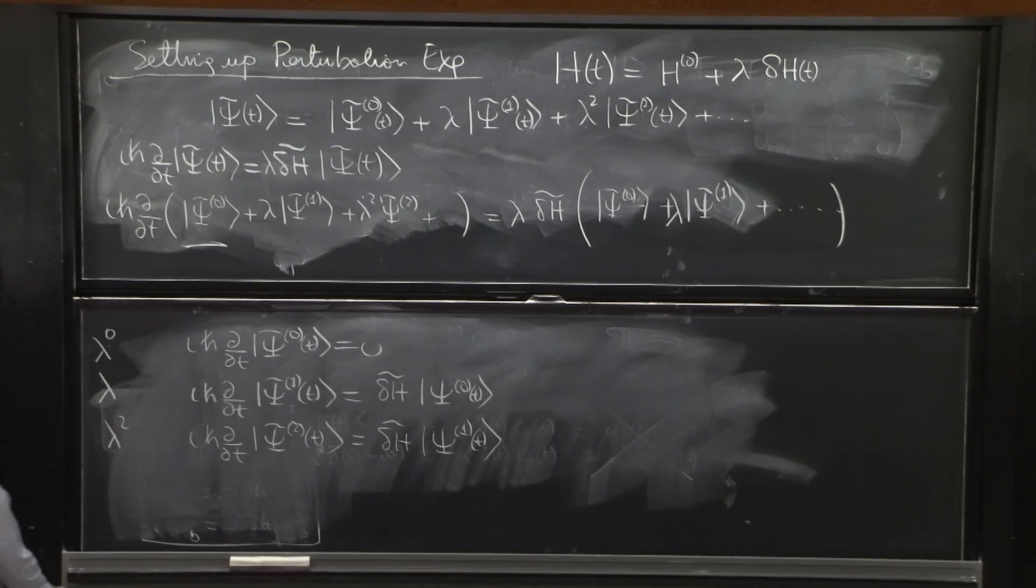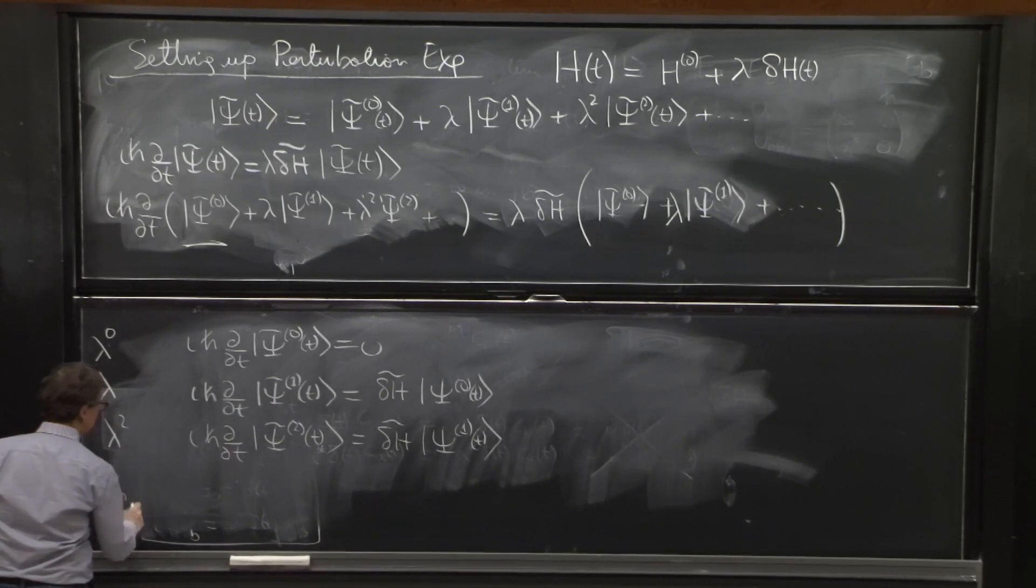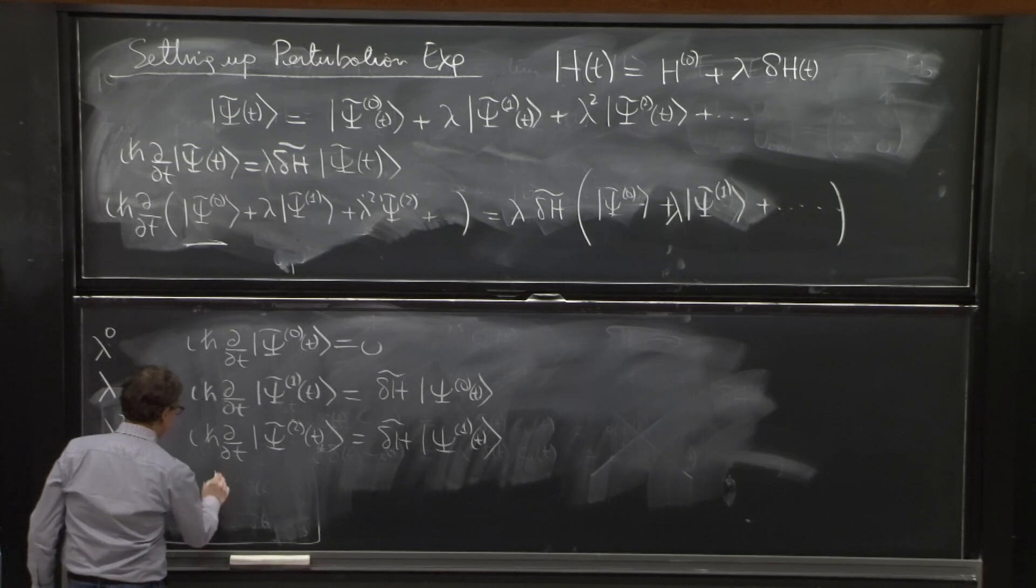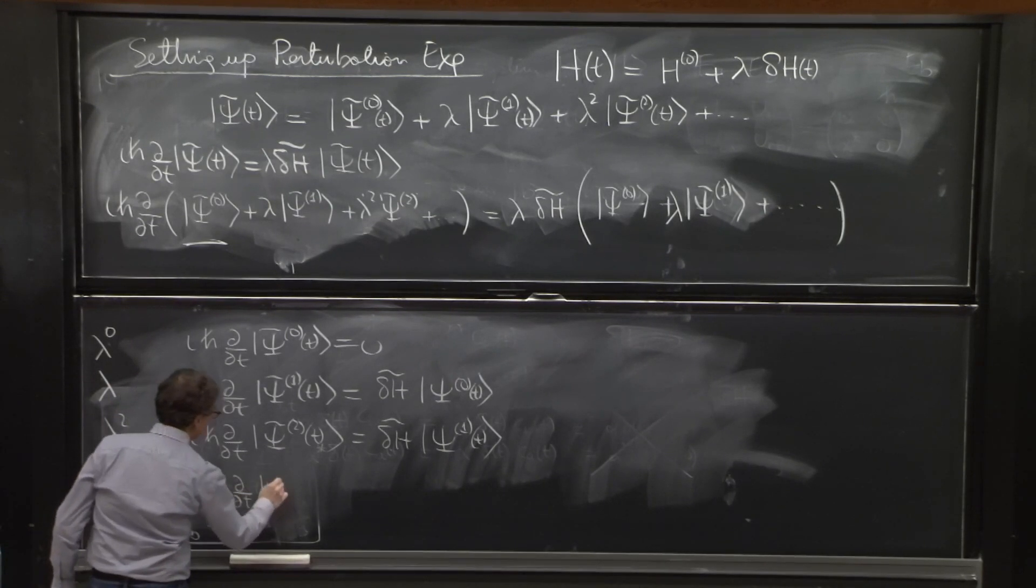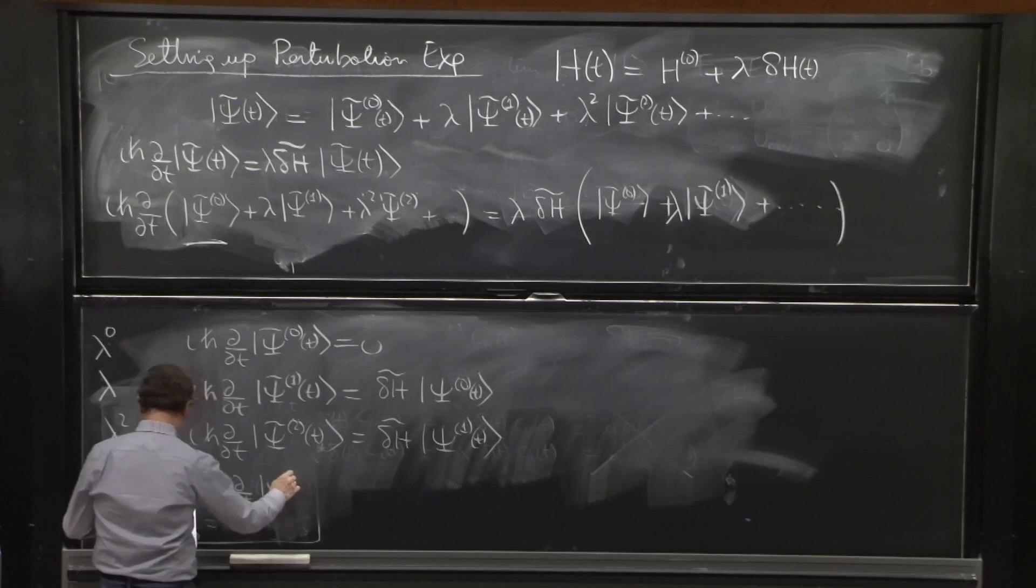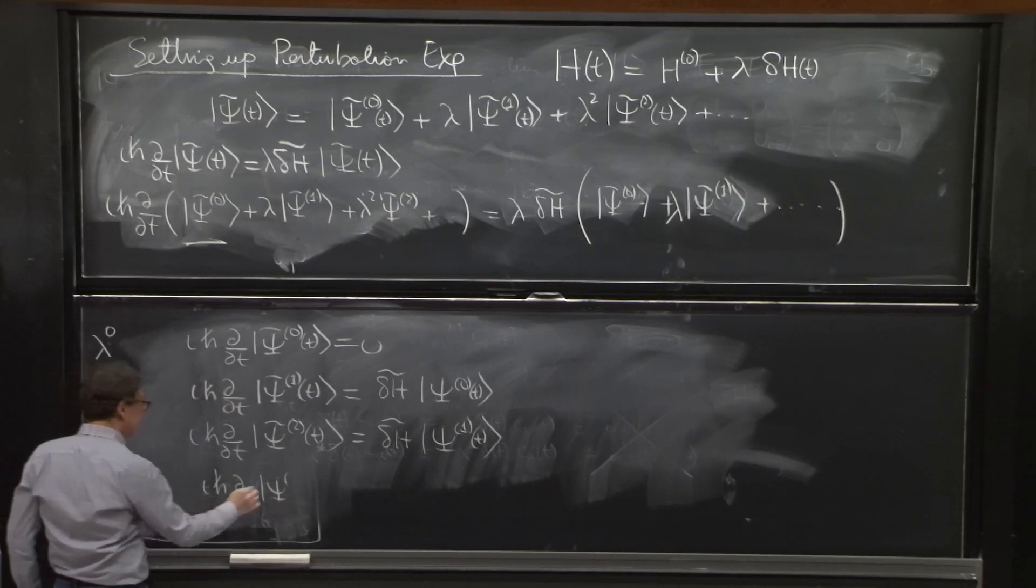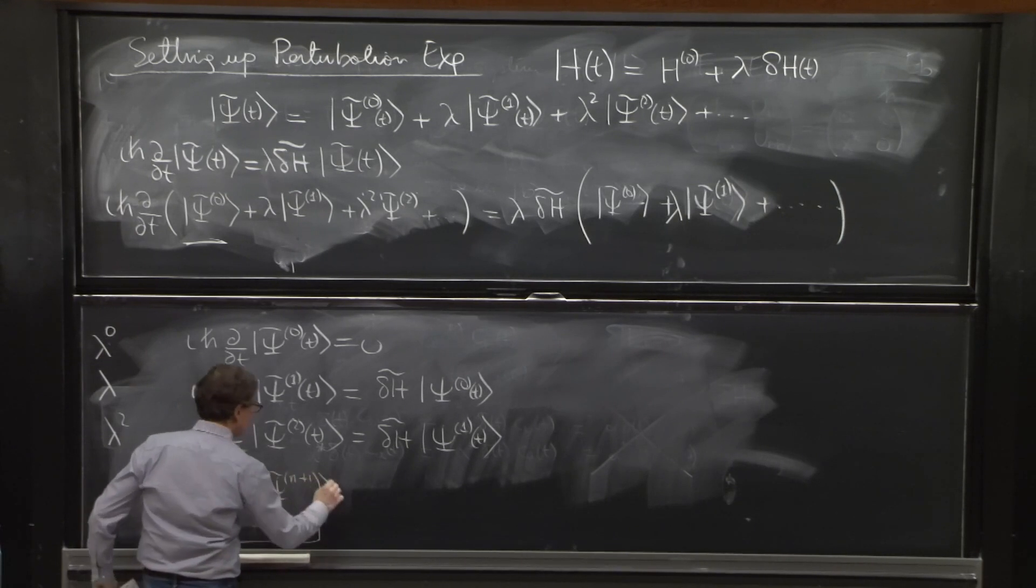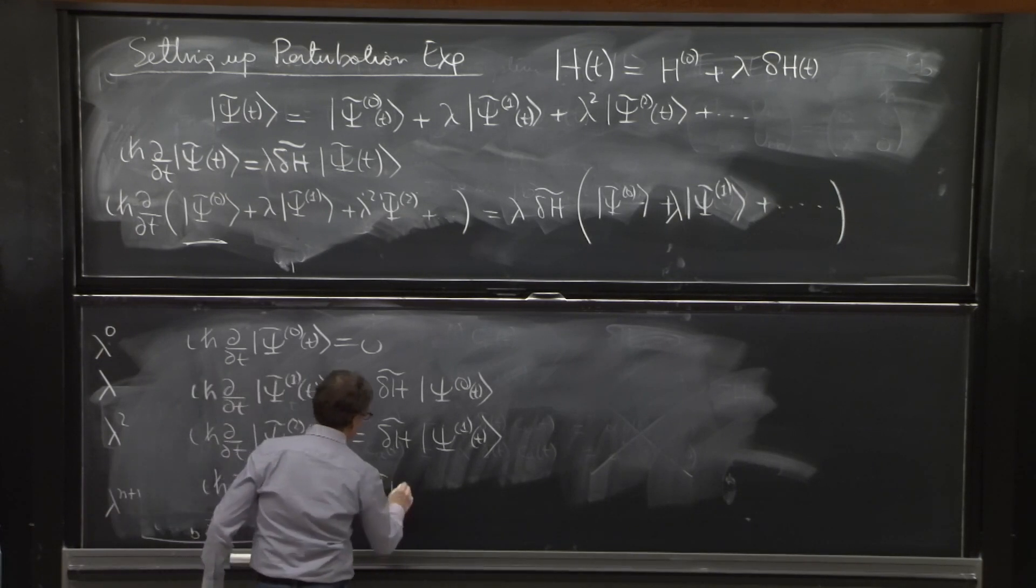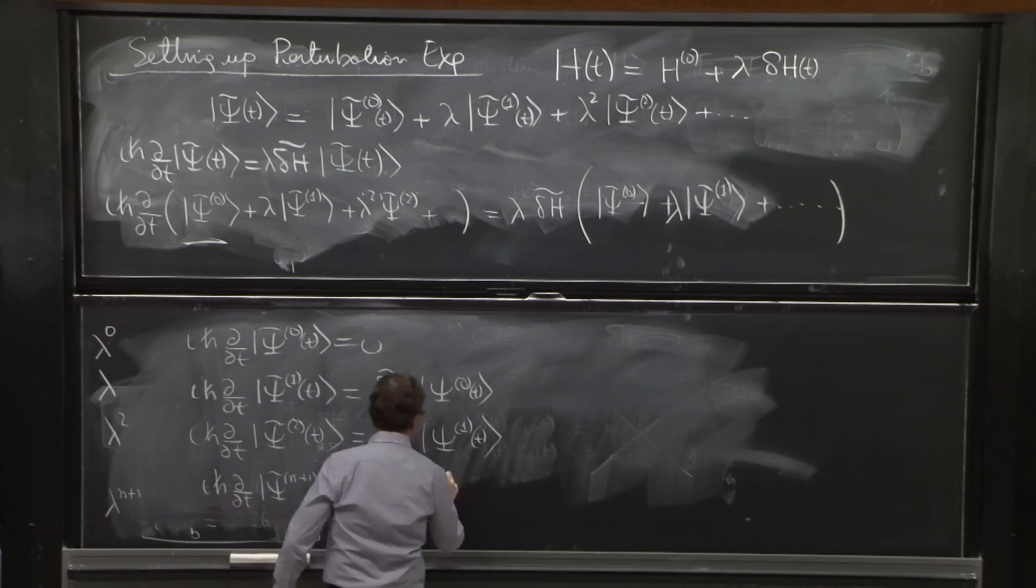In general, for lambda n, you will get i h bar d dt of psi n. Well, I'll actually put n plus 1. n plus 1 here is given by delta h acting on the previous one.